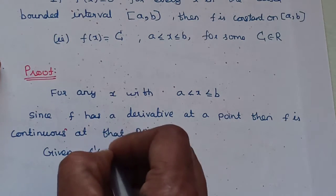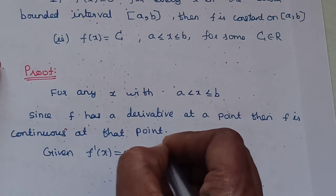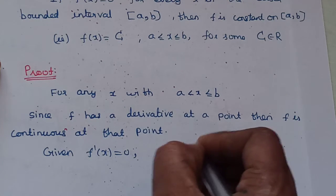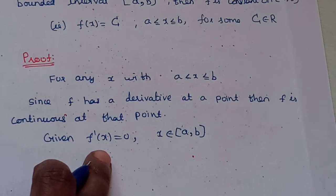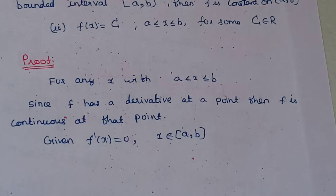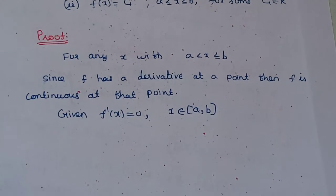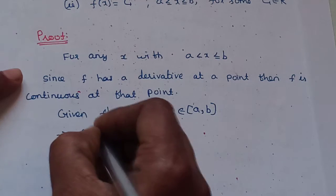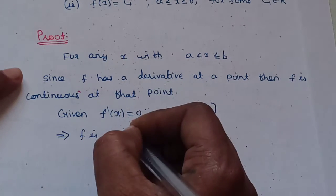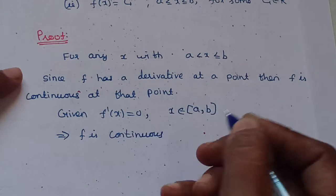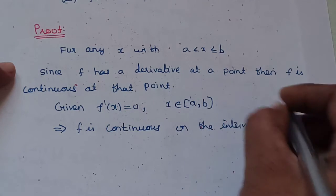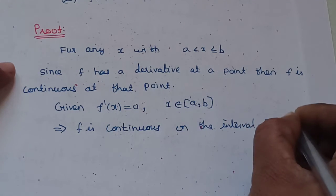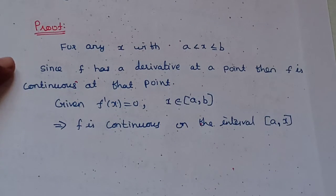Given f'(x) is equal to 0, where x belongs to the closed interval [a, b]. If f'(x) is equal to 0, then the function is continuous. The function is continuous on the interval [a, x]. This implies f is continuous on the closed interval [a, x].